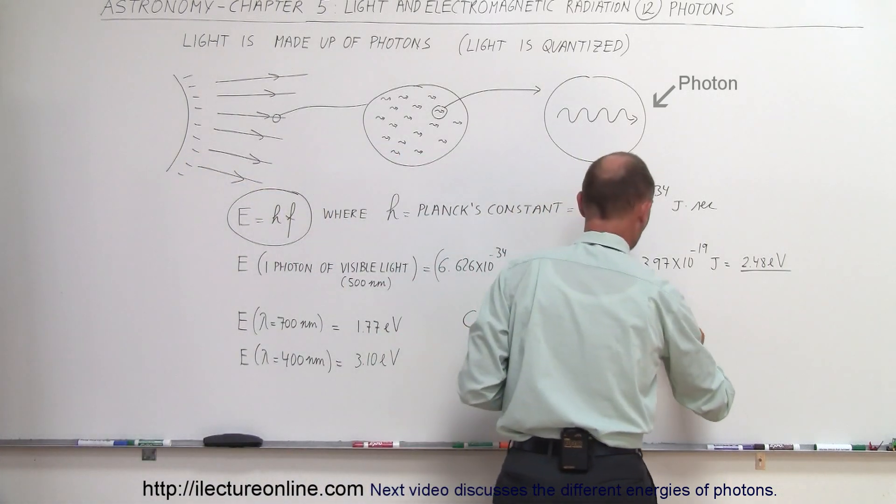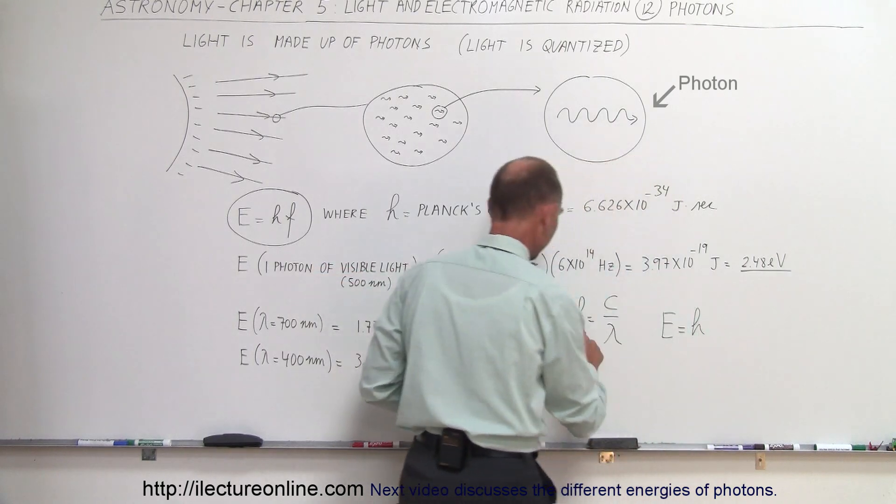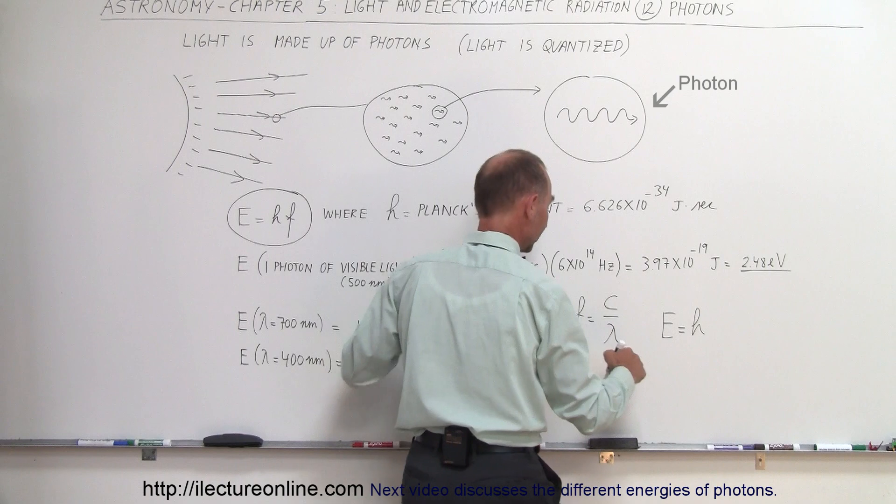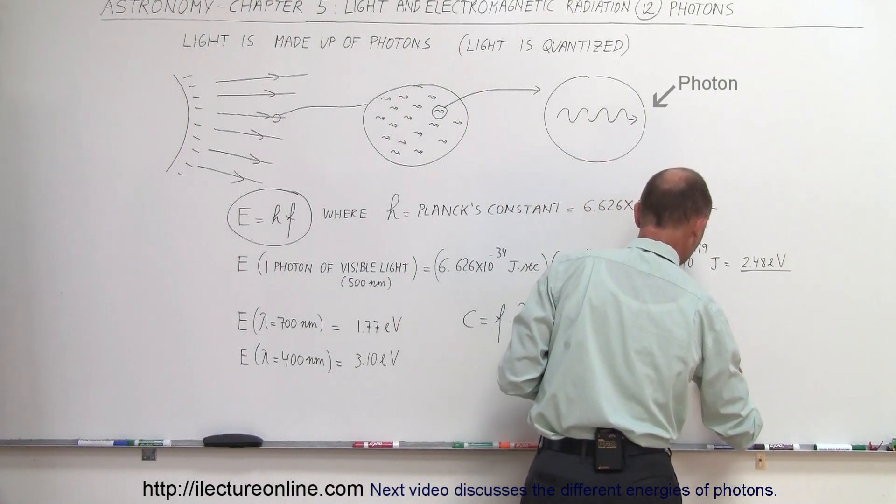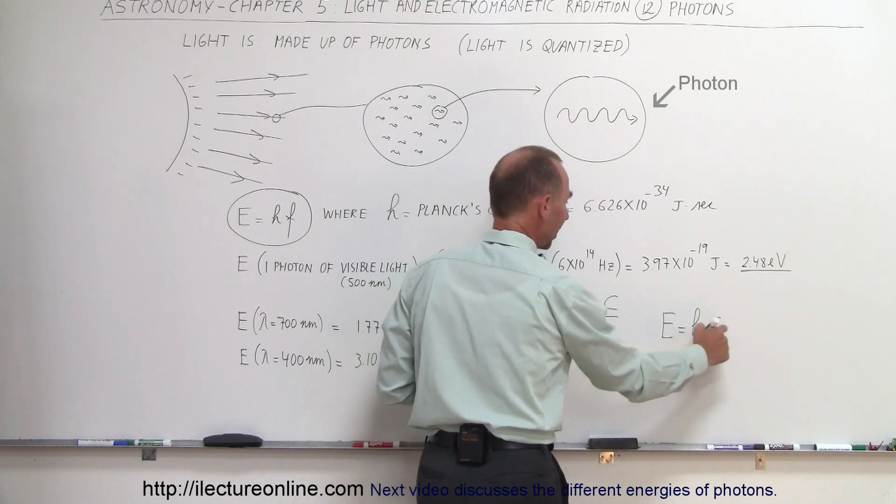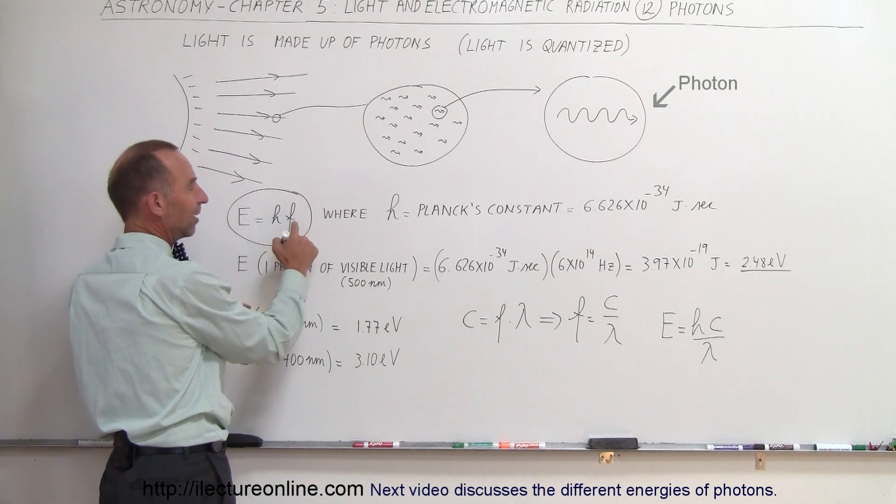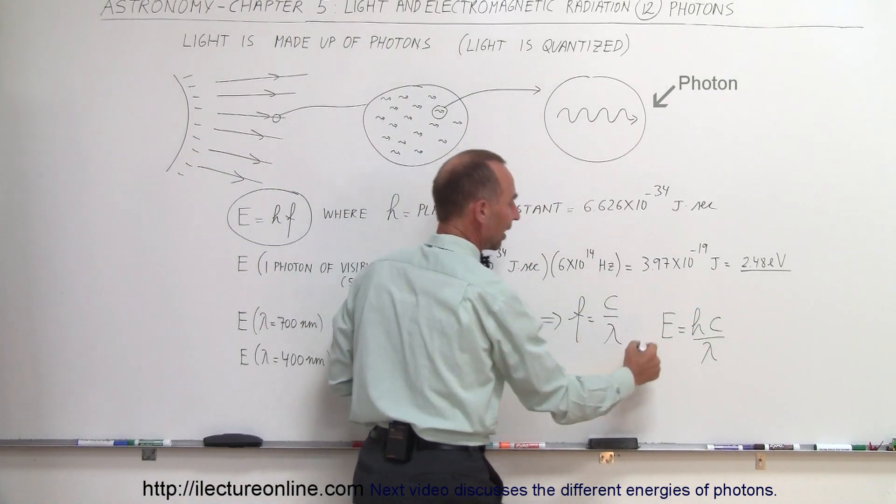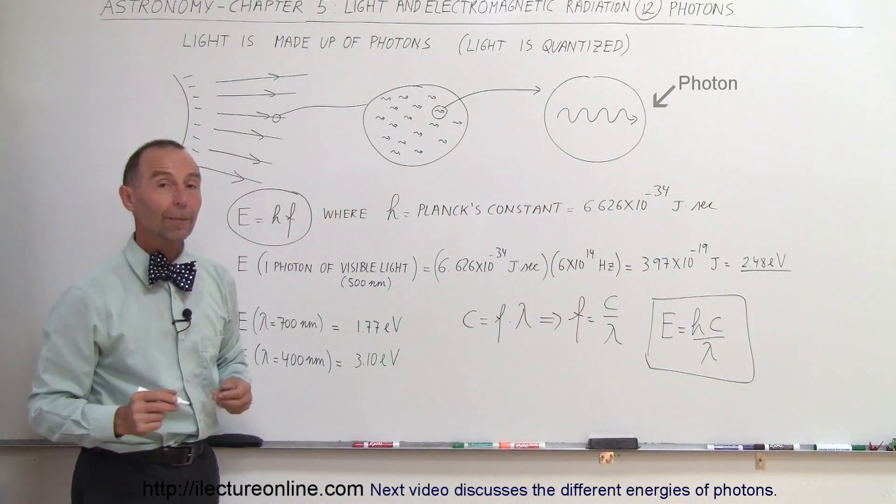So we can write that the energy of a photon can also be written as h, and instead of the frequency, we can multiply times c over lambda. So we can write hc divided by lambda, because h times f is the same as saying h times c over lambda, since f is c over lambda. So we can write the energy of a photon in those terms as well.